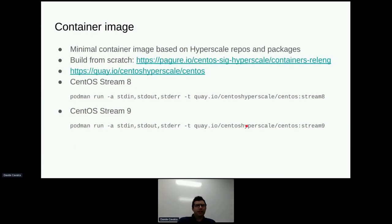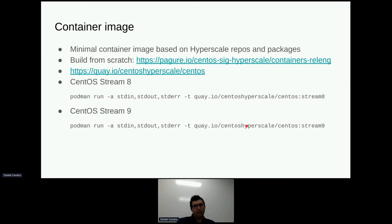Other deliverables we've been working on recently include the container image. Hyperscale has had a container image for a while — this image is built from scratch and not from the stock CentOS image. You can get it on Quay, and more recently we streamlined the process we use for building this image. You can get it for both Stream 8 and Stream 9. It's currently manually triggered by a script. We would like to eventually onboard this onto OpenShift so we can get automated builds, either on a daily basis or whenever there are package updates. If you use this, please let us know what works, what doesn't, or file issues — this is what we use internally for our CI so it gets reasonably good testing.